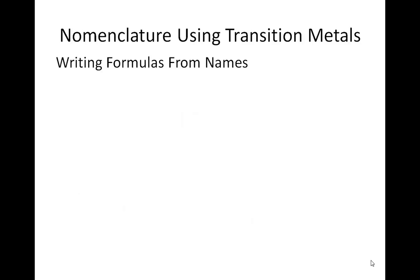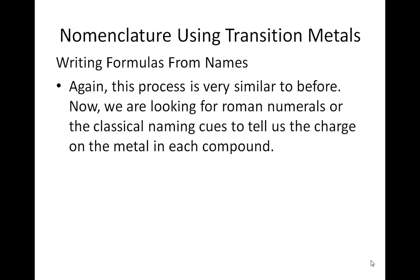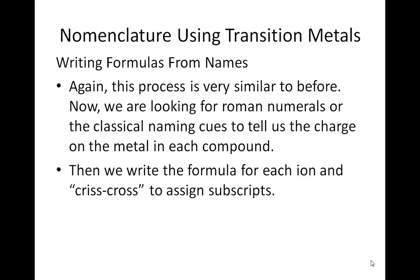Now, if we go the other way — writing the formula when given the name of the compound — the process is very similar to before. We're looking for Roman numerals or the classical naming cues to tell us the charge on the metal in each compound. Then we write the formula for each ion and crisscross to assign subscripts, just like we did before.